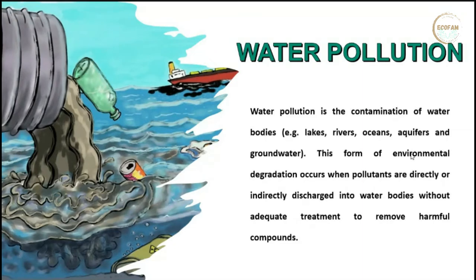Grey water comprises organic waste from dishwashing and cleaning. Both grey water and black water have different kinds of treatment and uses; many countries like Israel and Singapore use segregation at the source level. Other anthropogenic or man-made sources of water pollution include animal sheds, slaughterhouses, detergents, and pesticides.